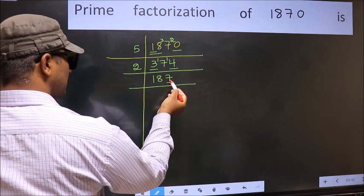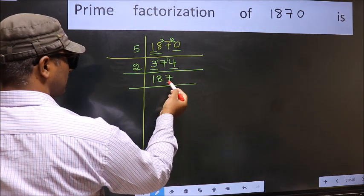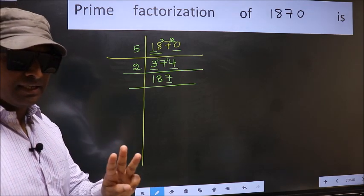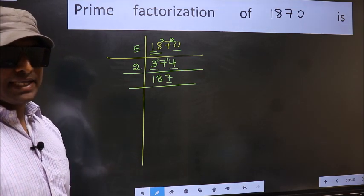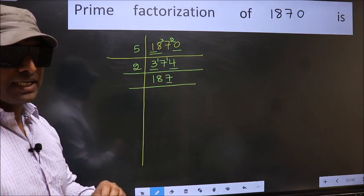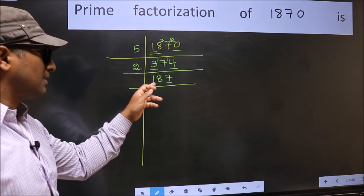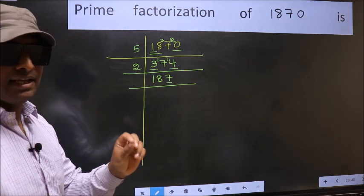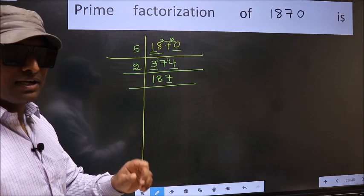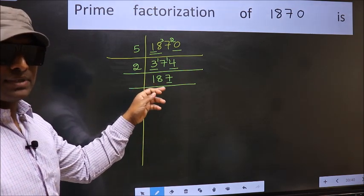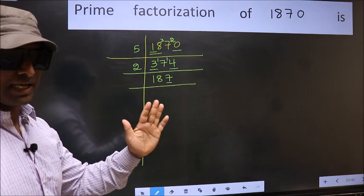Now the last digit 7, not even, so not divisible by 2. Next prime number 3. To check divisibility by 3, we should add the digits. What I mean is 1 + 8 + 7 = 16, and 16 is not divisible by 3, so this number also not divisible by 3. Next prime number 5.